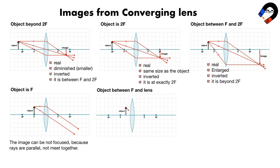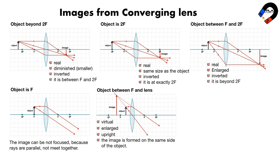When an object is between f and the lens, start by drawing a ray from the top of the object through the center of the lens — this ray continues in a straight line. Draw a dashed line continuing this ray upwards. Next, draw a ray from the top of the object parallel to the axis to the lens; when it emerges it travels through the principal focus f. Draw a dashed line continuing this ray upwards. The image is found where the two dashed lines meet. In this case the image is virtual, enlarged, upright, and formed on the same side as the object.